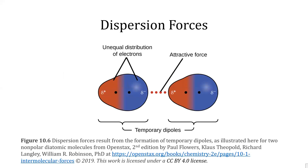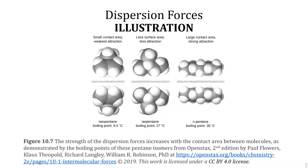Molecules with London dispersion forces can attract one another by the formation of temporary dipoles. A molecule that is nonpolar, once there has been an unequal distribution of electrons, will attract with other molecules. Nonpolar molecules have this attractive force. This figure illustrates the effect of surface area in regards to intermolecular forces, showing three isomers of the molecular formula C5H12.